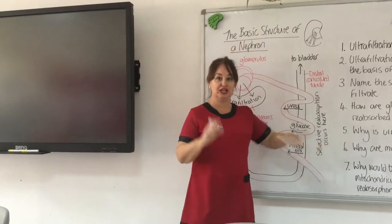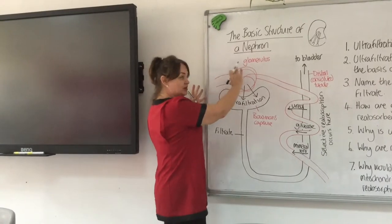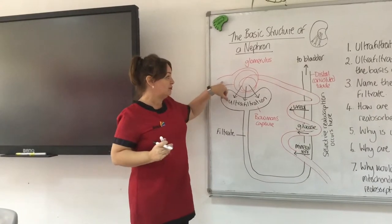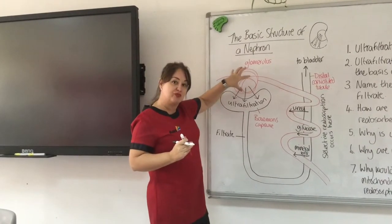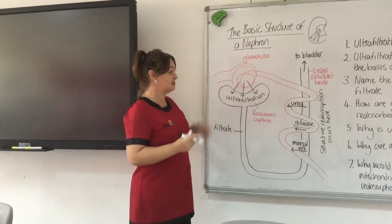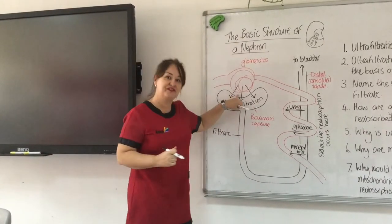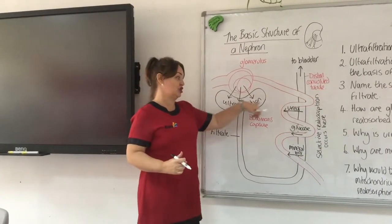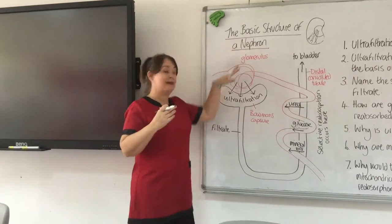Let's consider ultrafiltration first. As the blood capillary goes into the kidney, it goes into a massive knot. You'll notice that the capillary going in is wider than the capillary coming out. That creates really high pressure inside. There are little gaps there, and that high pressure forces the components of blood that are small enough to fit through those gaps out. That process is called ultrafiltration — 'ultra' meaning everything — and filtration, because it works on the basis of size.